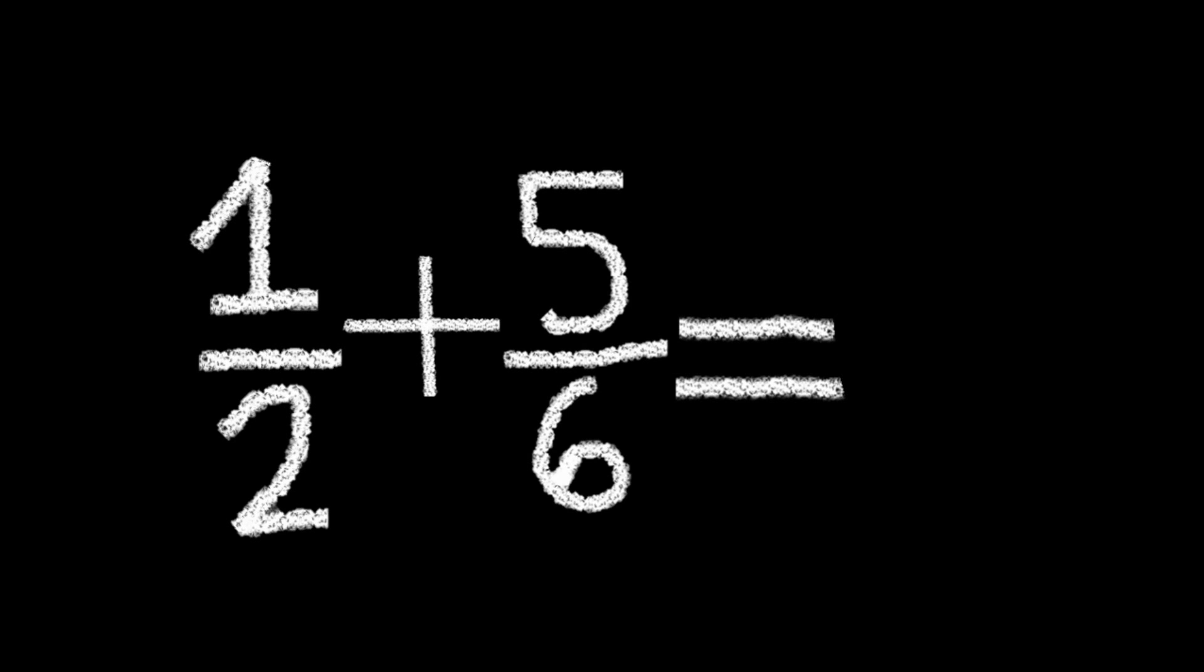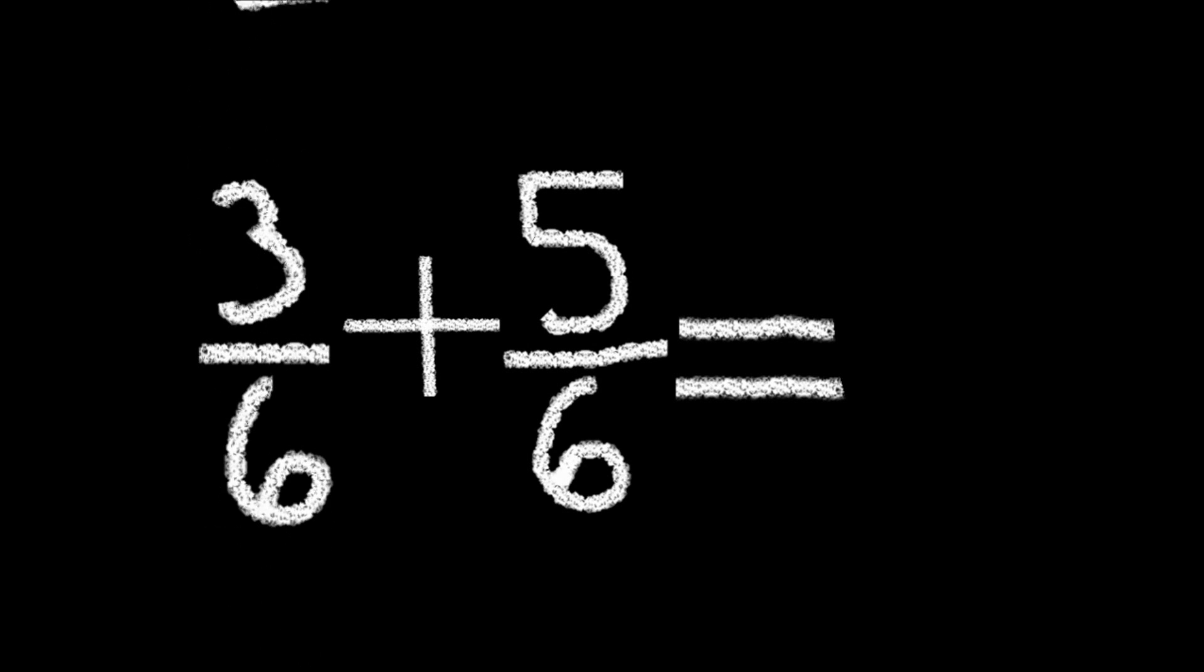If you're adding two fractions together whose denominators are not the same, then you have to find equivalent fractions with the same denominator. For example, if we want to add 5 sixths with 1 half, we can multiply both the numerator and denominator of 1 half to get 3 sixths. 3 sixths plus 5 sixths is equal to 8 sixths, or 1 and 1 third.